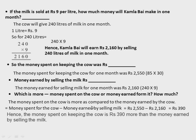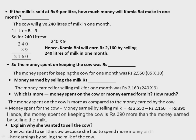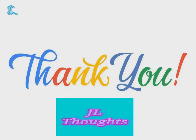Kamla Bhai wanted to sell the cow because she was spending ₹390 more per month than she was earning from milk sales, making it unprofitable. That concludes this part of the lesson. We will continue in the next part. Have a nice day, children.